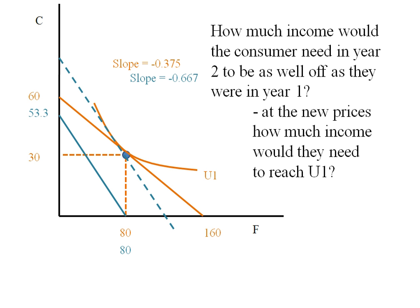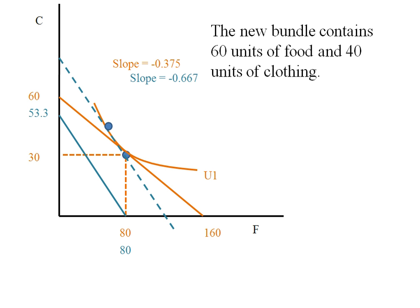So the slope of it reflects the new prices and we've increased the income hypothetically to get back to our original level of utility. There'll be a tangency spot there and let's suppose we know that that bundle contains 60 units of food and 40 units of clothing.